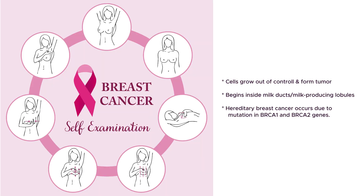Breast cancer occurs due to cells growing out of control and forming a tumor. It begins inside milk ducts and milk-producing lobules. Hereditary breast cancer occurs due to mutations in the BRCA1 and BRCA2 genes.